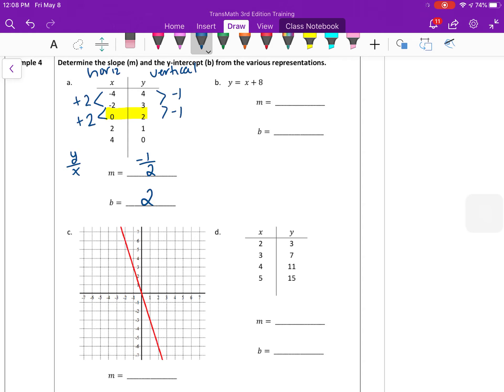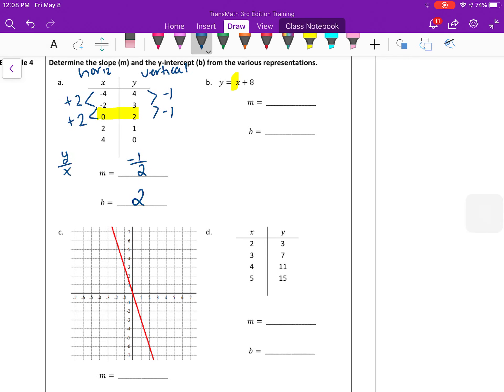All right, in B, if you remember when we looked at patterns and equations before, the slope was the number in front of the x. So here we have an x. That's the same thing as a 1x. So we have a slope of 1, and then the y-intercept is going to be our constant, which is 8.